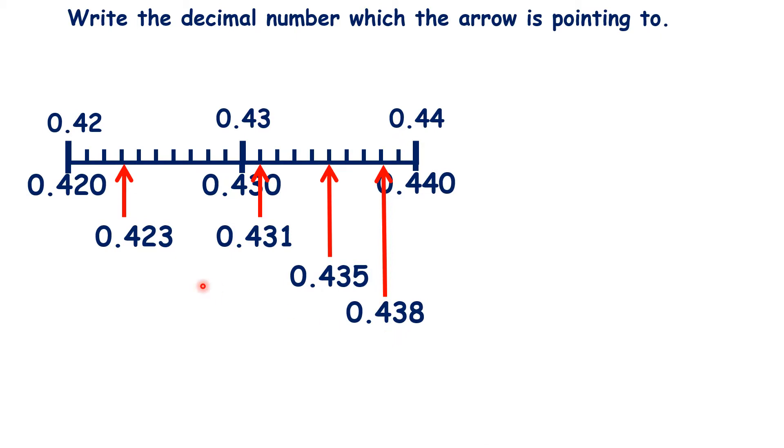So if you use the zeros trick, finding decimals on a number line is no more difficult than finding whole numbers on a number line. All that is different here is that we have zero point at the start of everything.